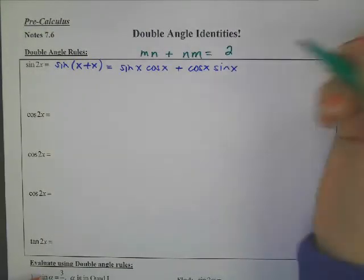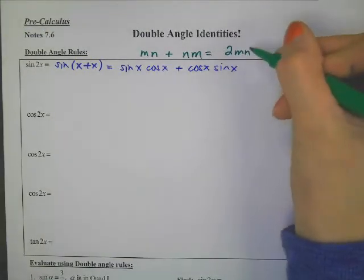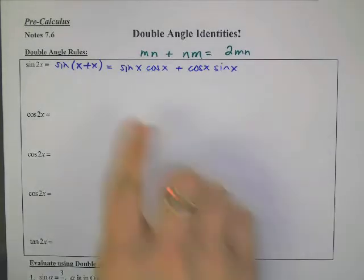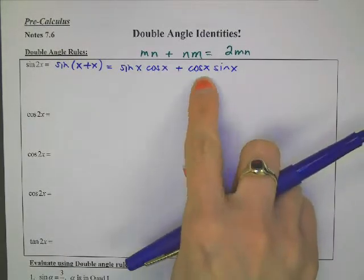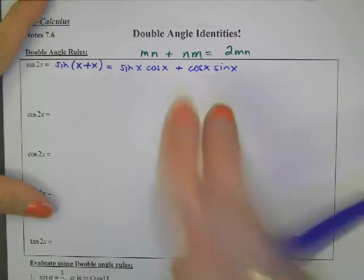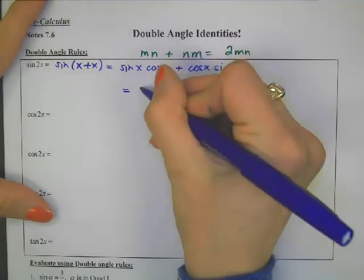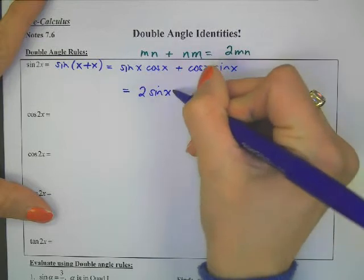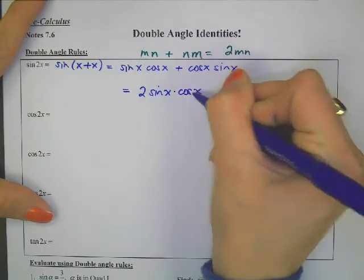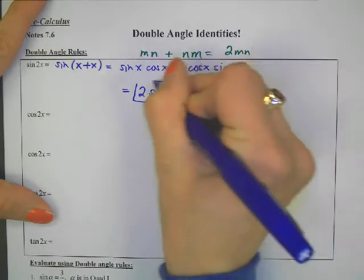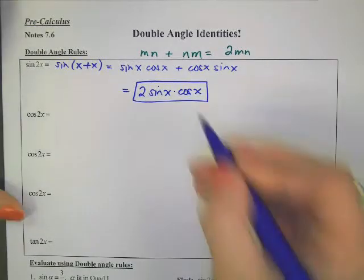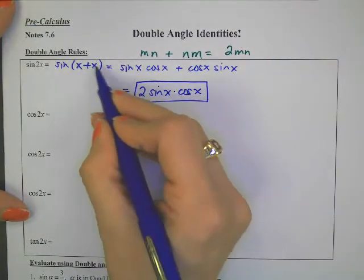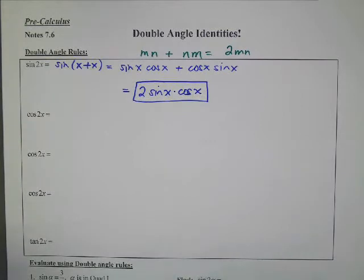That's 2mn and it doesn't matter what order you put them in. We have a sine and a cosine and a sine and a cosine, and they're all of x, so these can be combined into 2 sine of x times cosine of x. That is the double angle identity. When in doubt, in a pinch, you could always make these.